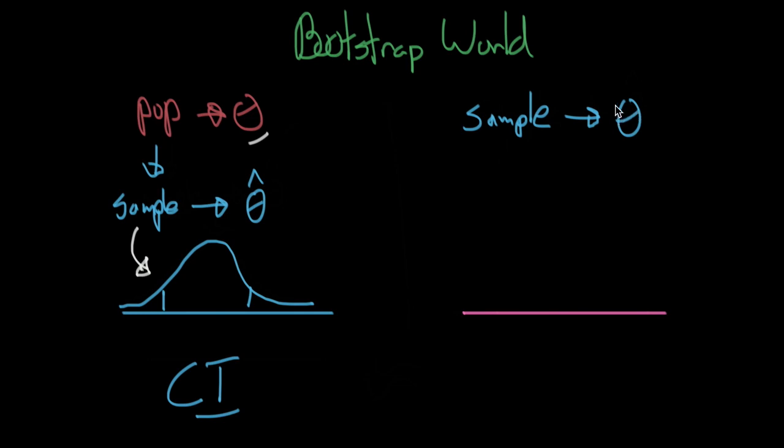So again, you know, the sample makes theta hat, which is a good estimate for theta. But we'll take this one step further. We can go ahead and sample, and we'll call these bootstrap samples from the sample. So we sample from the sample as if the sample was the entire population to go ahead and get lots and lots of what we're going to call theta hat stars.